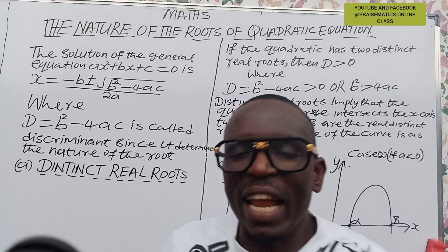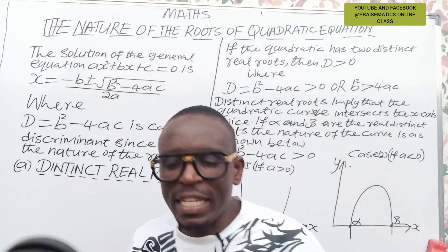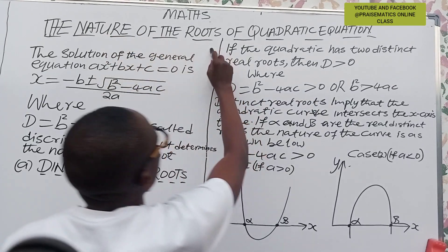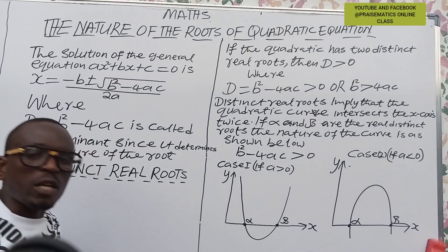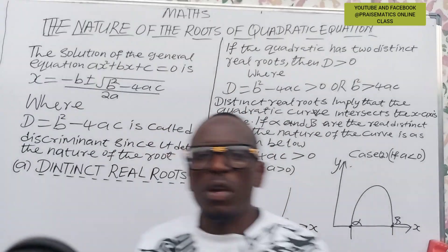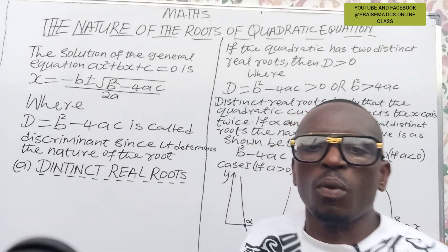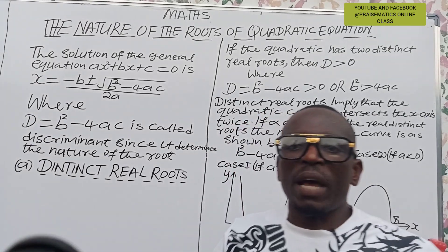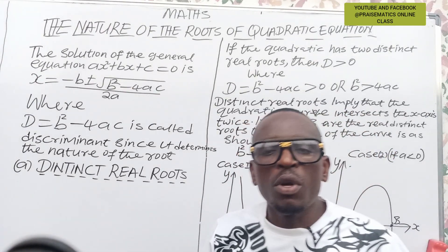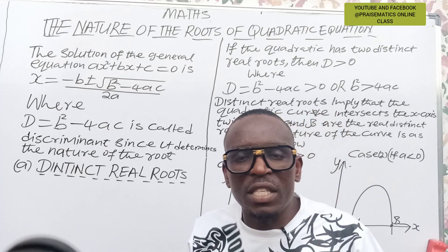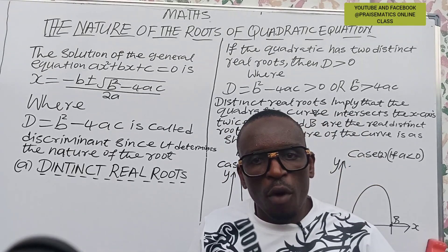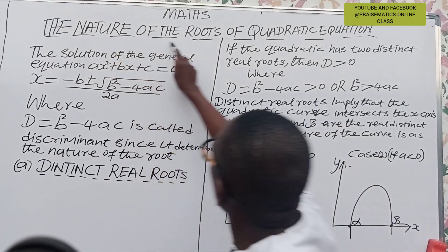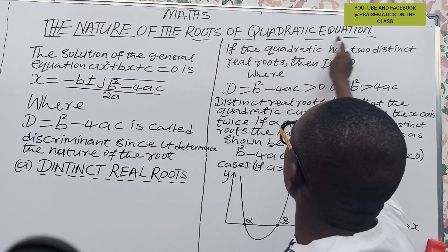Welcome once again to Prismatics Online Class. In this class we are going to look at the nature of the roots of quadratic equations. We have explained all about quadratic equations in our previous class — the meaning, the methods of application, and methods of solving quadratic equations: by completing the square, by factorization, and by the general quadratic formula. Today we are going to look at the nature of the roots of quadratic equations.